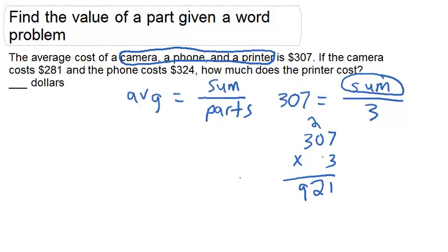Remember that we multiplied these because the sum is always equal to the average times the number of parts. So if our sum is $921, what is that going to be equal to? Well, it's going to be equal to adding all of the items up.